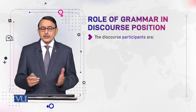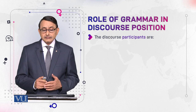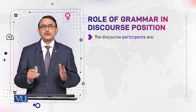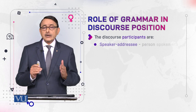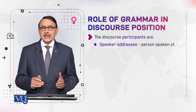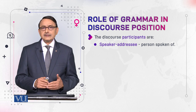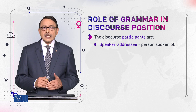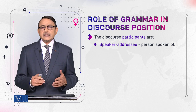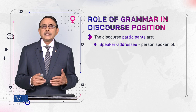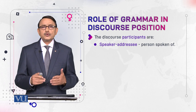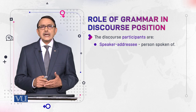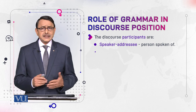The discourse participants — if we divide participants in a discourse, in a talk — one is the speaker, another is the addressee, and the third is the person that is spoken of. In Urdu we say 'mutakallam', 'mukhaatib', and 'wahid gaib' for these three roles.